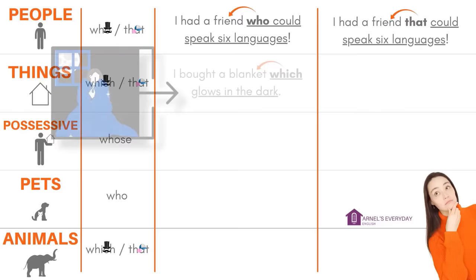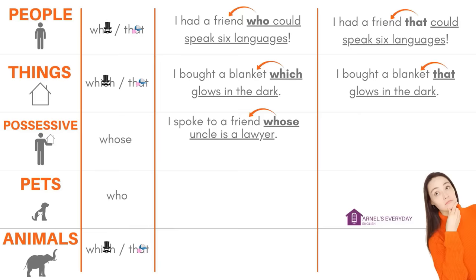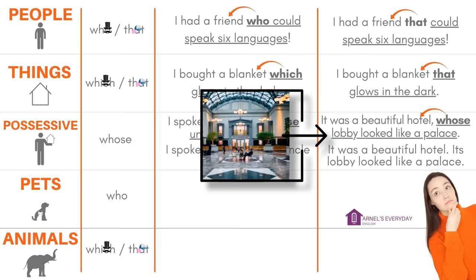I spoke to a friend whose uncle is a lawyer. Possessive can be a bit confusing, but think about it like this: I spoke to a friend — his uncle is a lawyer. Same thing. We can also use whose for things, not just people. It was a beautiful hotel whose lobby looked like a palace — same as saying its lobby looked like a palace.